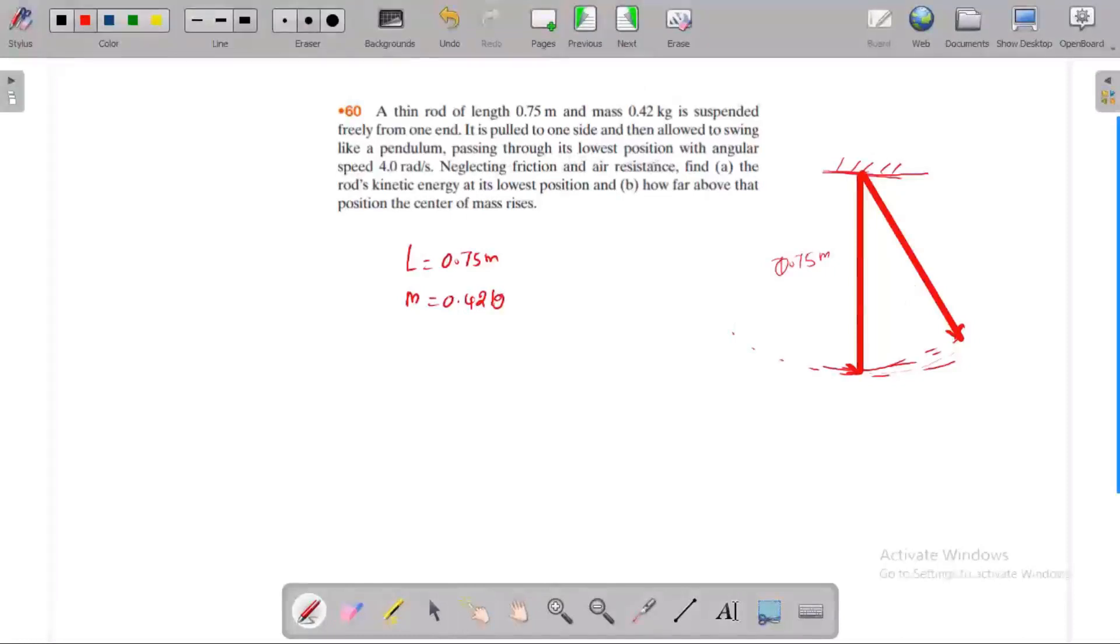It passes through its lowest position with angular velocity. The lowest position is here at the end. The angular velocity is 4 radians per second.